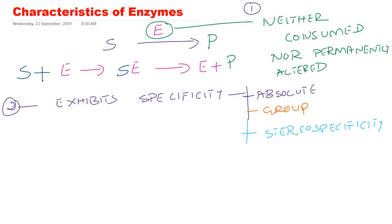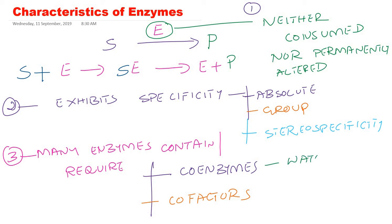And many enzymes may contain or may require what is called coenzymes or cofactors. So they are called prosthetic groups. Usually coenzymes are derived from water-soluble vitamins, and cofactors are many times metal ions. So this is the overview. I will be talking about specificity and coenzymes in a separate video after the classification. So the overall characteristic features of enzymes: in an enzymatic reaction they are neither consumed nor permanently altered. So enzyme will come out after the product formation, and they exhibit specificity, and many enzymes may contain or may require cofactors or coenzymes. They are called prosthetic groups.